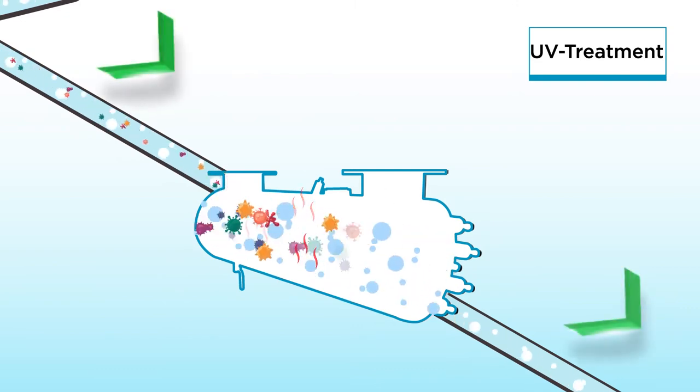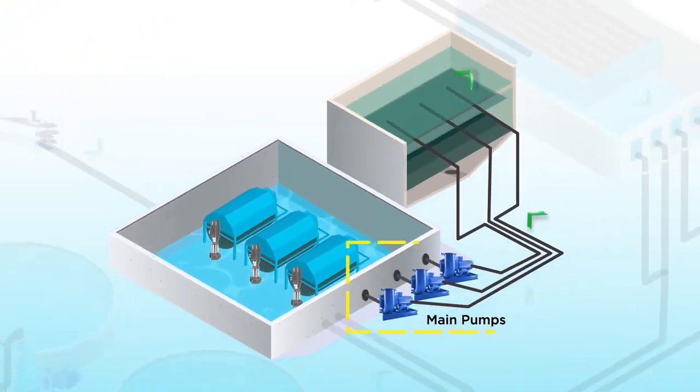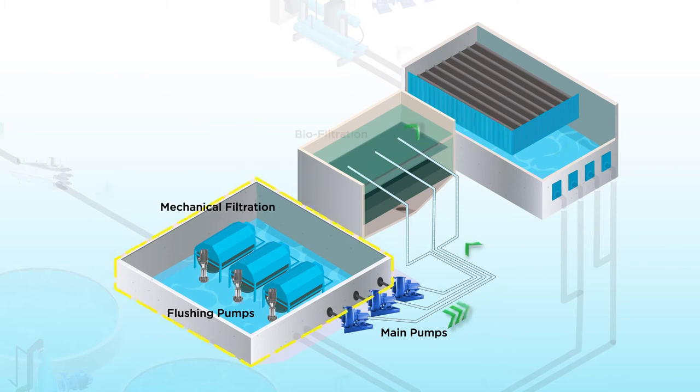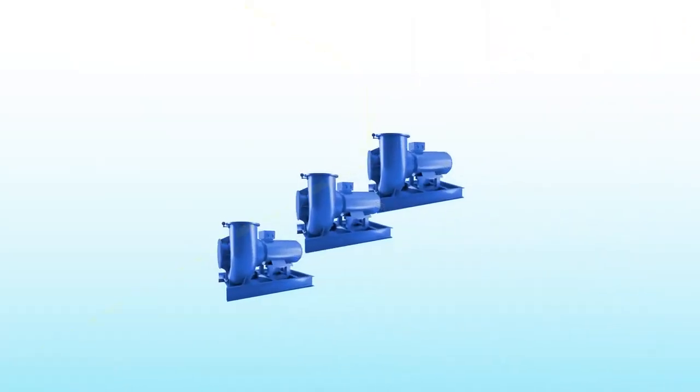After the seawater is disinfected, DESMI's high-flow, low-pressure main pumps lift the water after the mechanical filtration to the biofiltration and degassing. Depending on the configuration of the recirculating aquaculture system, the water lift can also take place during other stages.